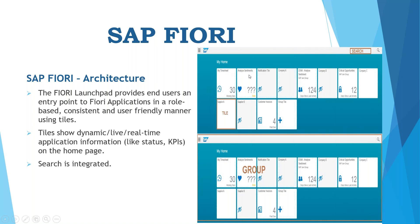Some tiles are static and some tiles are dynamic. For example, if you are a manager with five timesheets to approve, when you log into the Fiori launchpad you will see the count right on the tile. These are called dynamic tiles. You can also see real-time data on tiles with charts - these are called KPIs. You can also search for apps in the launchpad.